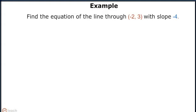Let us take an example. Find the equation of line through point (-2, 3) with slope -4.